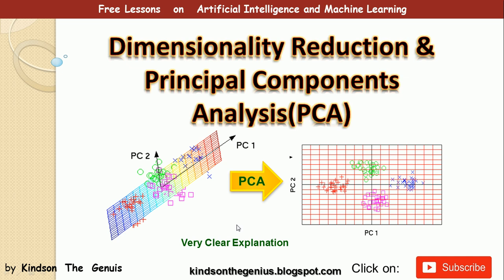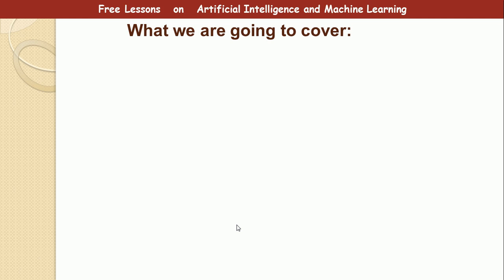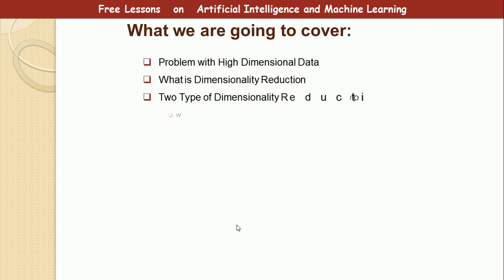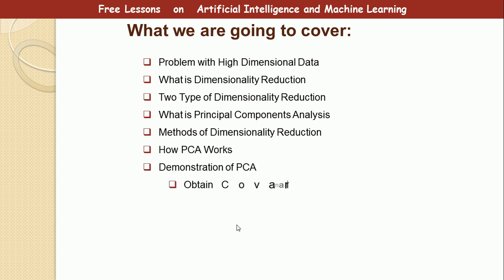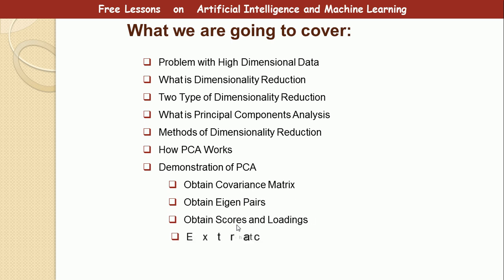Let's now look at this very clear explanation of dimensionality reduction and principal component analysis. In this 10 to 15 minute lesson, we are going to cover: the problems with high dimensional data, what dimensionality reduction is, two types of dimensionality reduction, what principal component analysis is and how it works, and then a four-step demonstration of PCA. At the end we will have our principal components explaining our data, and then we summarize everything.